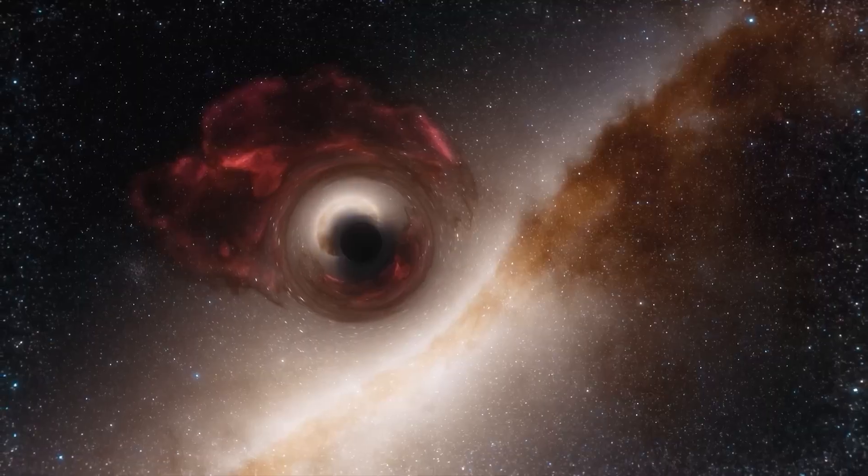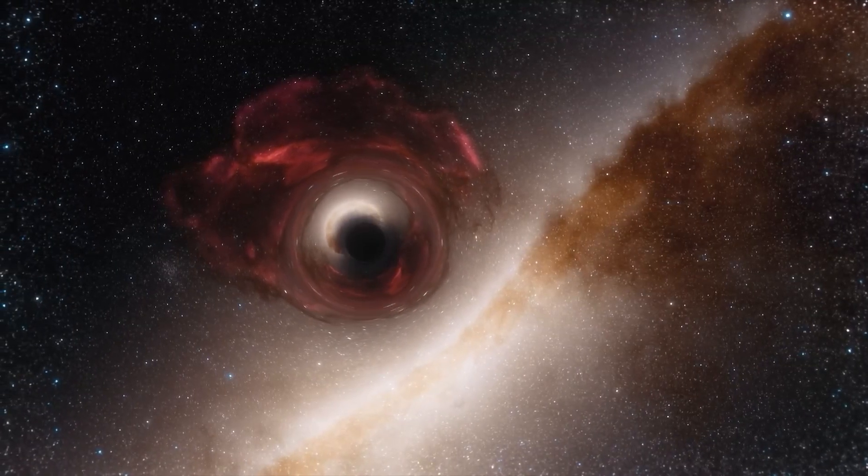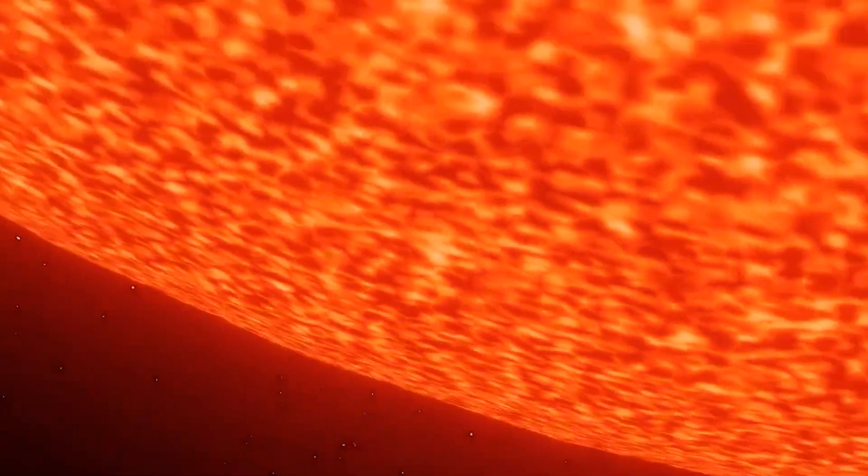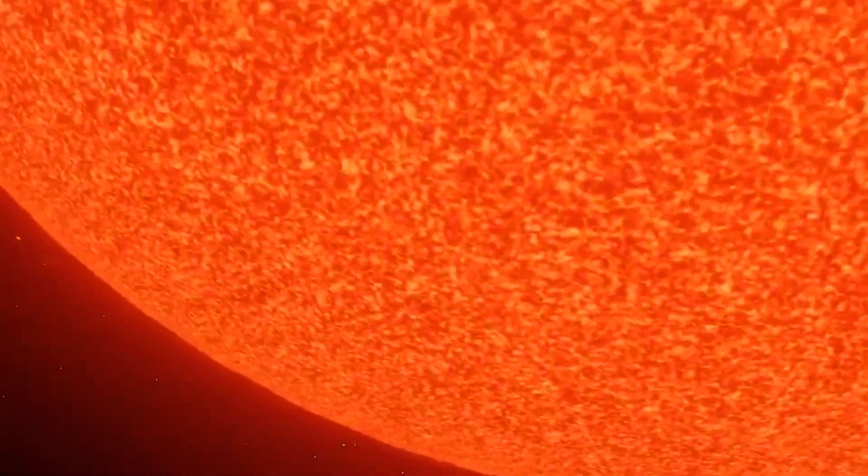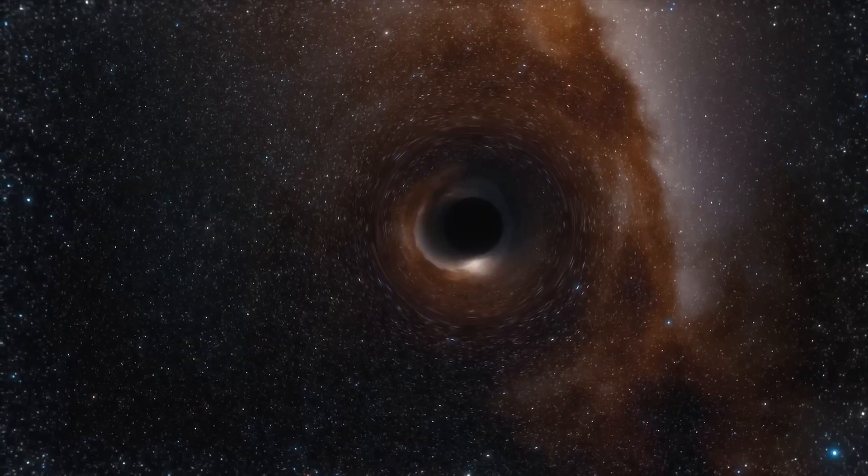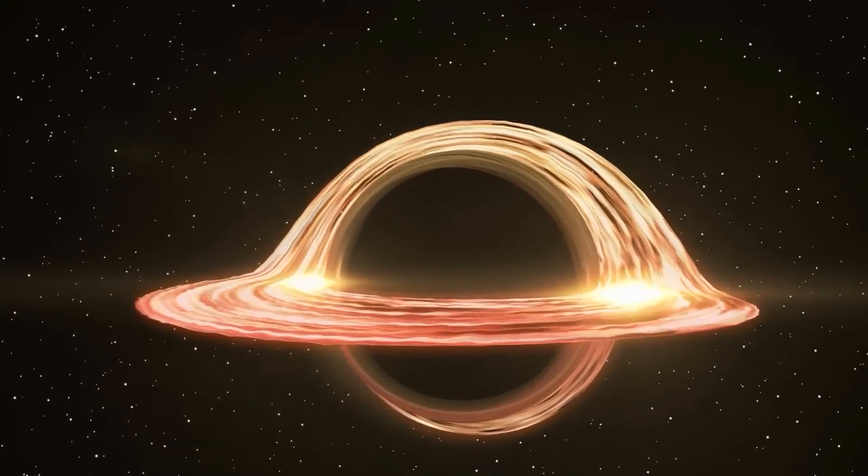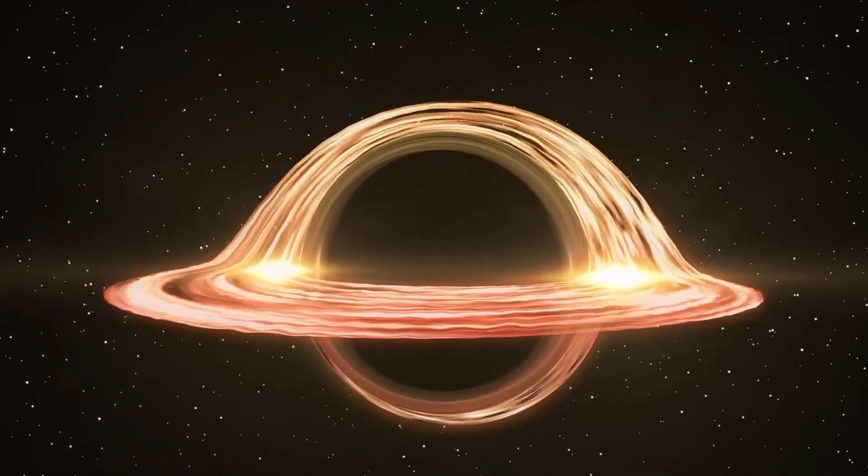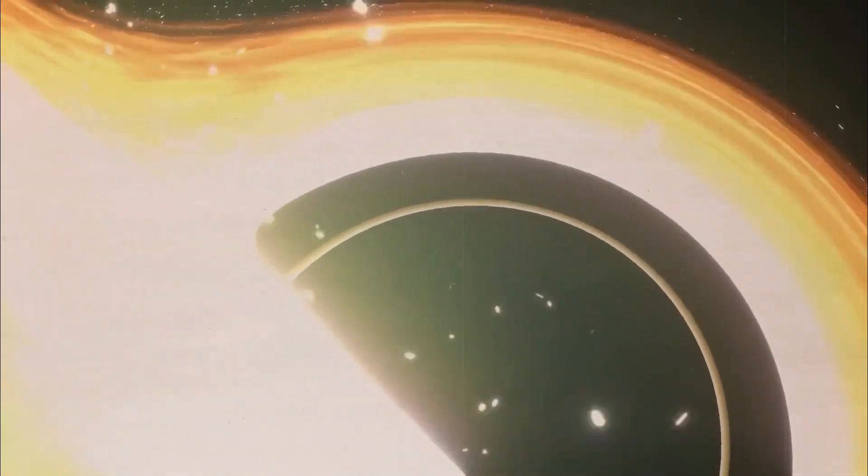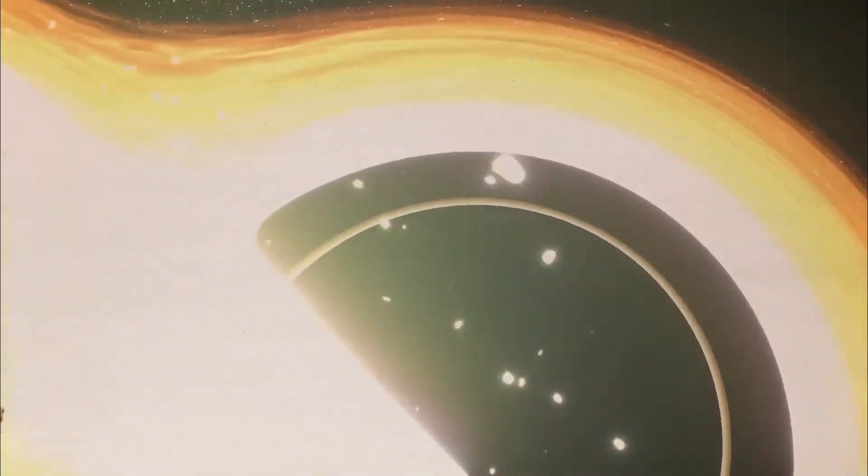It's the dimensions of its event horizon that are mind-boggling. The event horizon, the point of no return for matter and light in a black hole, spans a diameter of roughly 1,300 times the distance between the Sun and the Earth. If this black hole were placed at the center of our solar system, its edges would extend way beyond the boundary of interstellar space.